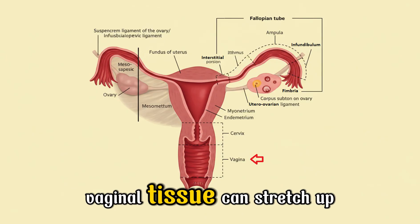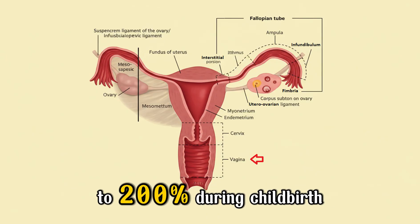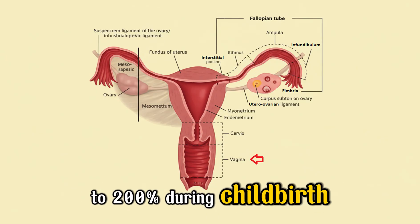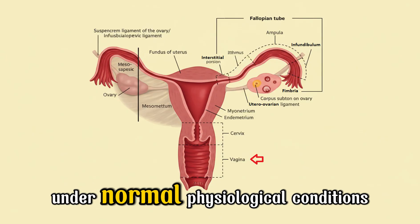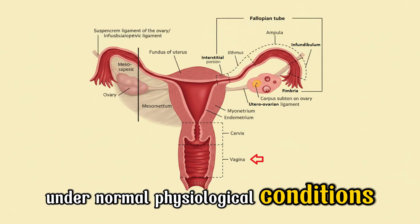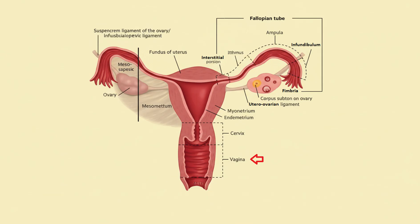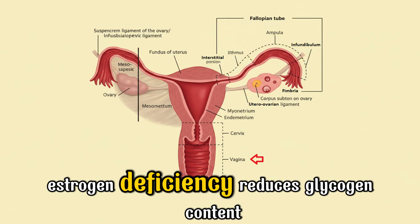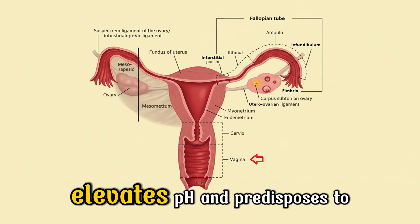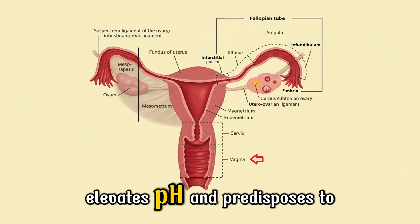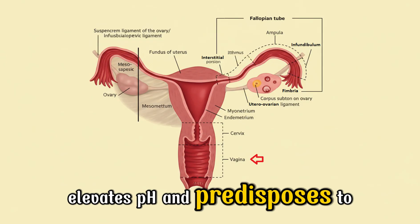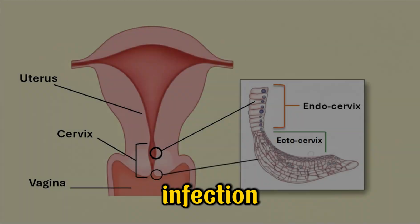Vaginal tissue can stretch up to 200% during childbirth under normal physiological conditions. Estrogen deficiency reduces glycogen content, elevates pH, and predisposes to infection.